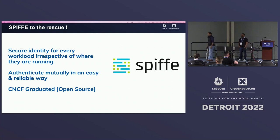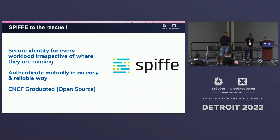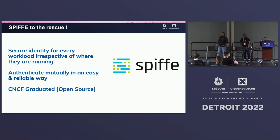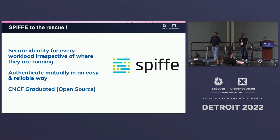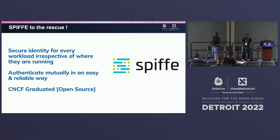Of course, SPIFFE is the answer to many of these things, especially in this context. If you've visited the SPIFFE pavilion or talked to any of the maintainers, please do — they'll talk about the things that are applicable to the work you do within your organization. From a SPIFFE perspective, what is SPIFFE? Secure identity for every workload, irrespective of where they're running. It basically allows you to authenticate mutually in an easy and reliable way. SPIFFE essentially allows you to attach some kind of identity to a workload, and based on that, securely and mutually allow access to other workloads.